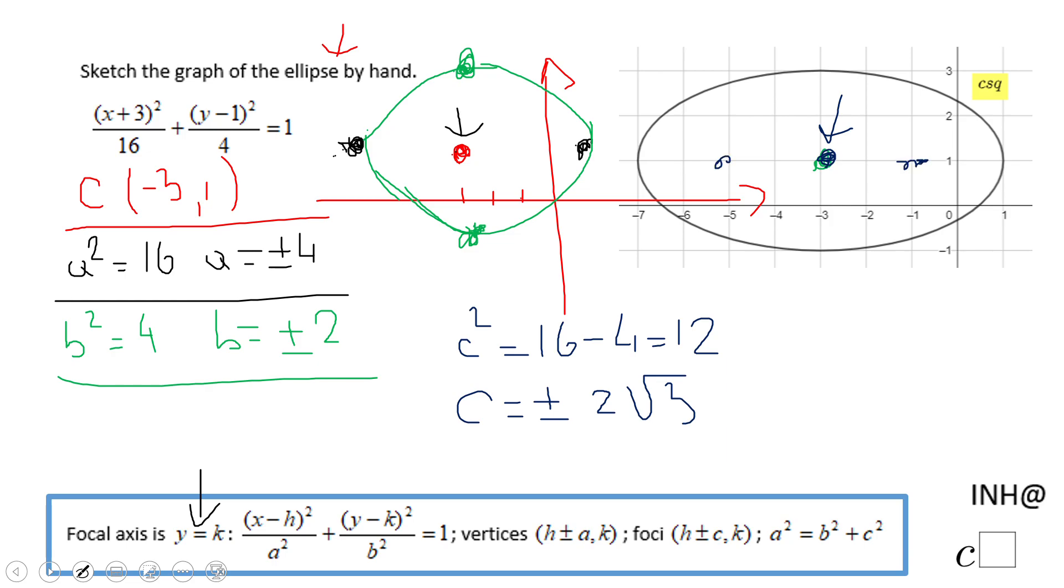Or if you want to find the coordinates, add 2 square root of 3 to negative 3 and subtract 2 square root of 3 from negative 3. And that's it. If you enjoyed this video clip, don't forget to click the like button and come back to C-Square for more help. Thank you.